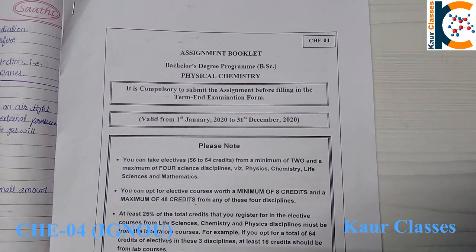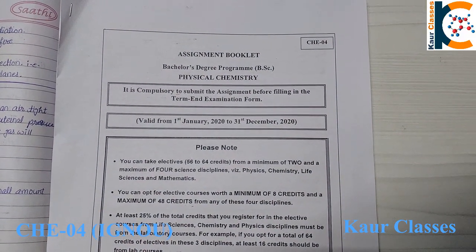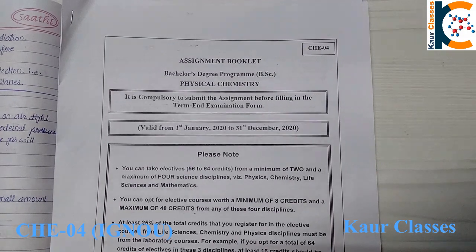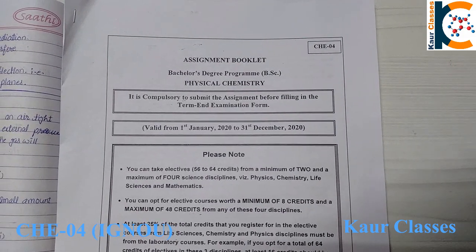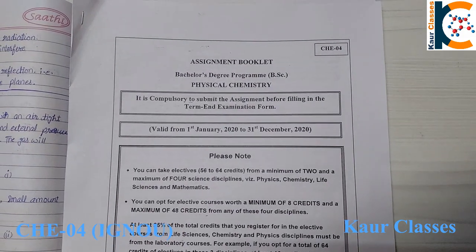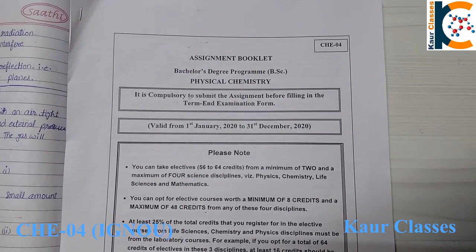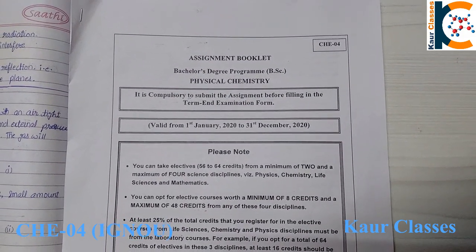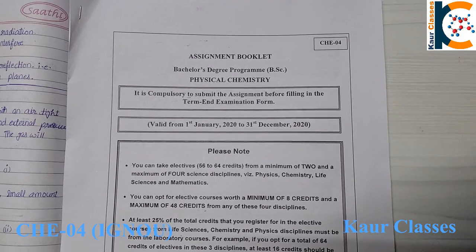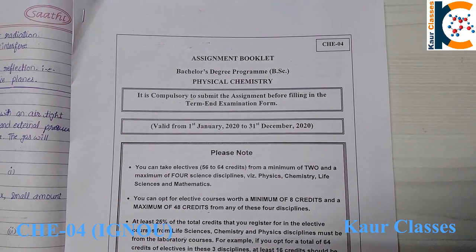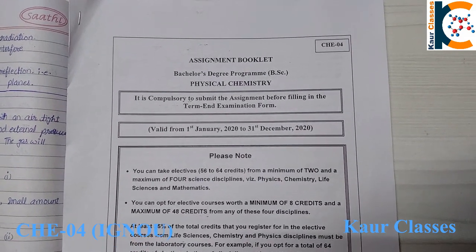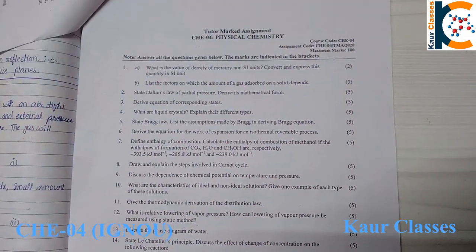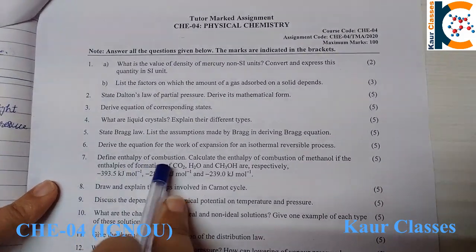Hello students, welcome to Core Classes. In the last video we covered Chemistry 04, questions 1 to 5. In this video we are going to discuss the next question — question number 6. The question is: derive the equation for work of expansion for an isothermal irreversible process.